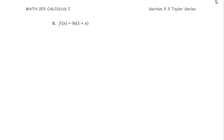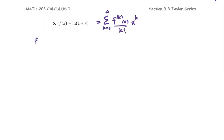f of x equals natural log of one plus x. We are going to rewrite this as a Maclaurin series, which is in the form of the summation of the k-th derivative at the point zero divided by k factorial times x to the power k, k from zero to infinity, as f of x equals natural log of one plus x.